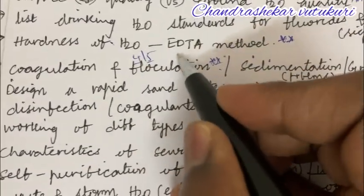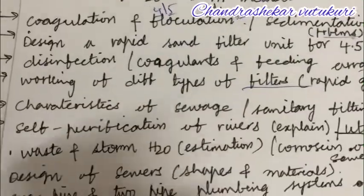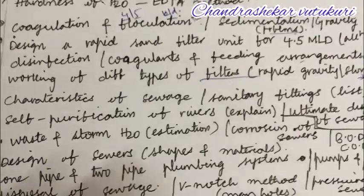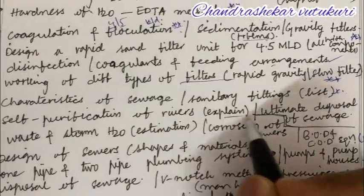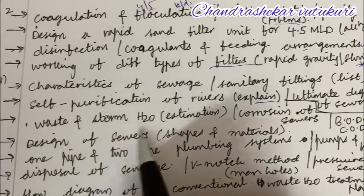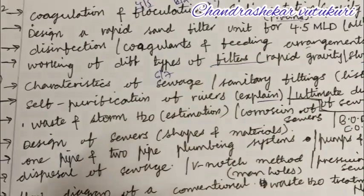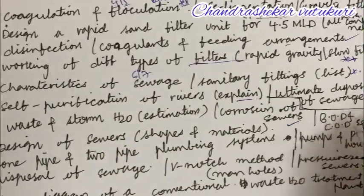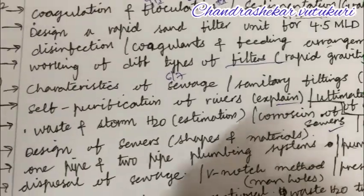This covers questions 4 and 5, B, C and D. Characteristics of sewage, sanitary fittings and the list of sanitary fittings, and self-purification of rivers — explain the term — and ultimate disposal of sewage is a question. Waste and stormwater estimation is said to be the sixth and seventh question. The corrosion of sewers and BOD and COD equation along with the problem is said to be the long question this time.